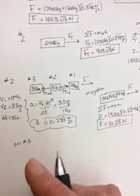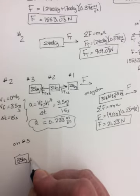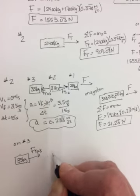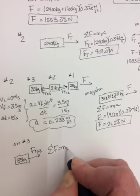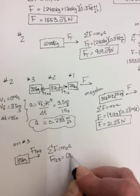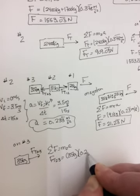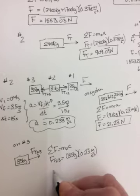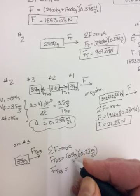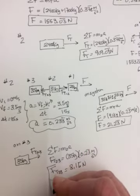So on number three, who is 35 kilograms, the only force he is experiencing is the tension from number two. So do some of the forces will equal M2A. And it will be this FT2-3 is equal to 35 kilograms times the 0.23 repeating meters per second squared. And when you do this, you get an FT2-3 of 8.16 with the six repeating newtons.